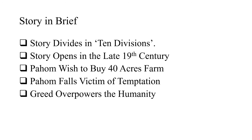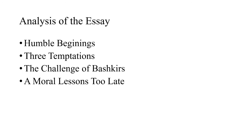The story divides into ten divisions and opens in the late 19th century. We discussed Pehom's wish to buy a 40-acre farm, how Pehom falls victim to temptations, and how greed overpowers humanity — meaning Pehom is a symbol of the whole human being. In an analysis of the essay we also discussed humble beginnings, the temptations used in the prose, the challenge of the Baskirs to Pehom, and the moral lesson taught by Tolstoy.